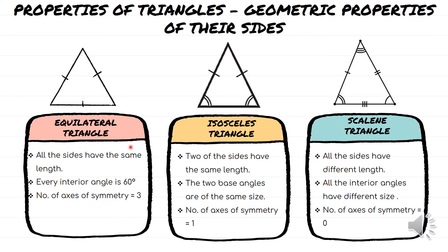The first one, equilateral triangles — all the sides have the same length. So if we have 6 cm here, then the rest of the sides will also have 6 cm. And the interior angle is 60 degrees, so we have 60 degrees here, 60 degrees on top, and 60 degrees here. The number of axes of symmetry is 3.